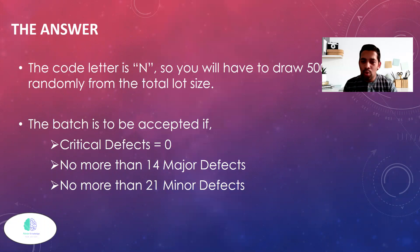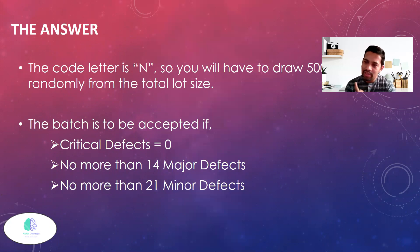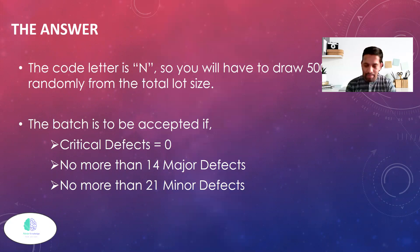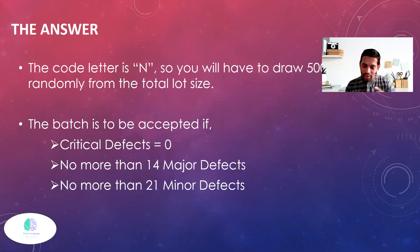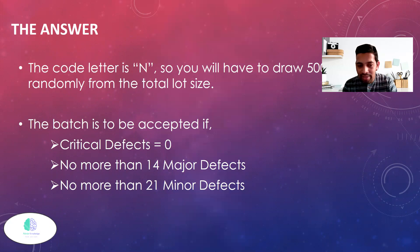No more than 14 major defects. Now there is a difference between defective and defect. Defective means completely scrapped. Defect means one item can have multiple defects. So: no more than 14 major defects and no more than 21 minor defects.